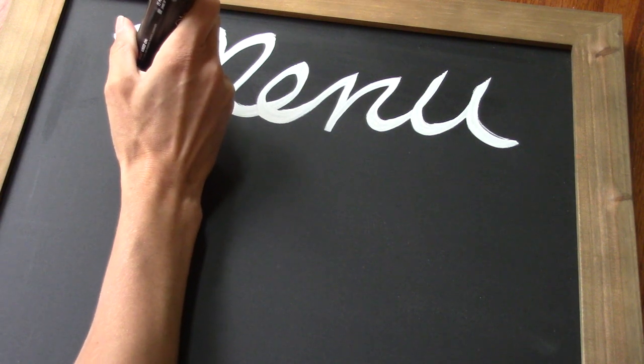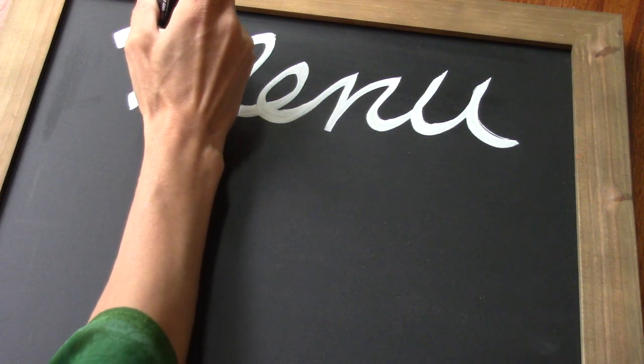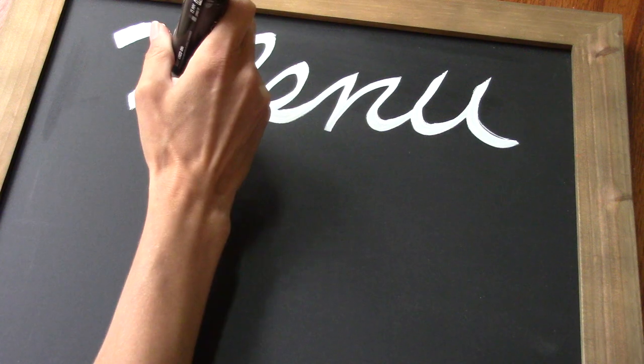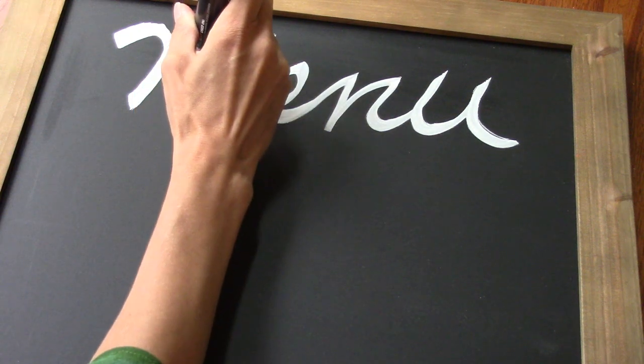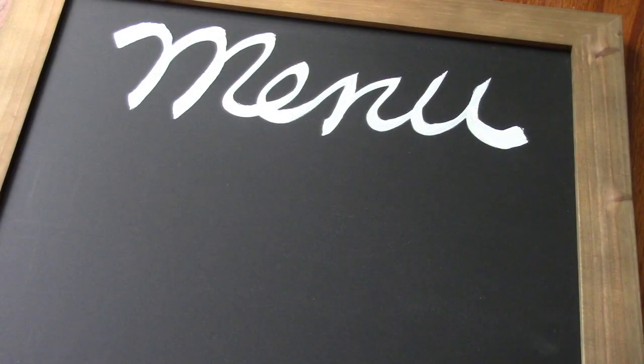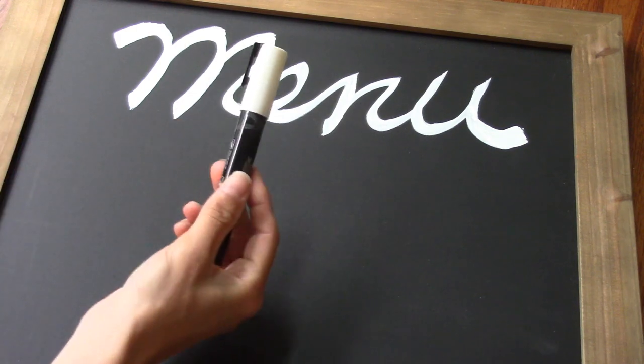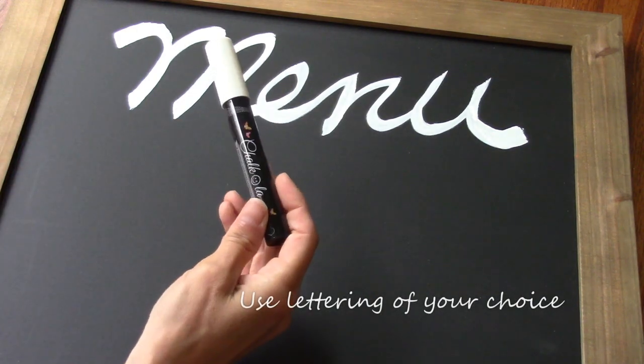Then you can go over it just a little bit to fix any mistakes or any additions you would want. So what I'm going to do is I'm going to use this smaller white marker.